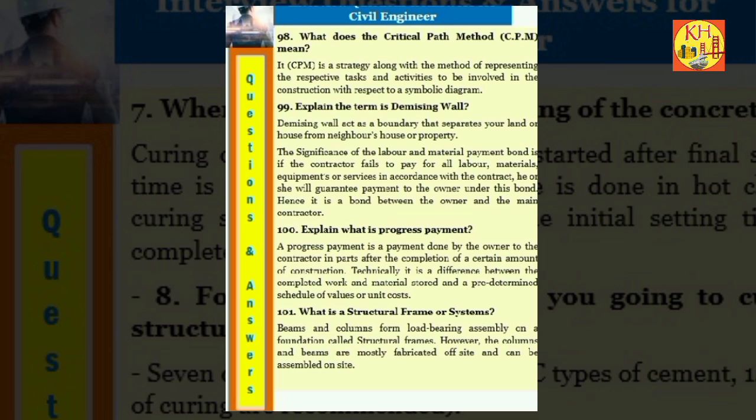Question 101: Explain what is progress payment. A progress payment is a payment done by the owner to the contractor in parts after the completion of a certain amount of construction. Technically it is a difference between the completed work and material stored and a predetermined schedule of values or unit costs. Question 102: What is a structural frame or systems? Beams and columns form load bearing assembly on a foundation called structural frames. However, the columns and beams are mostly fabricated off site and can be assembled on site.